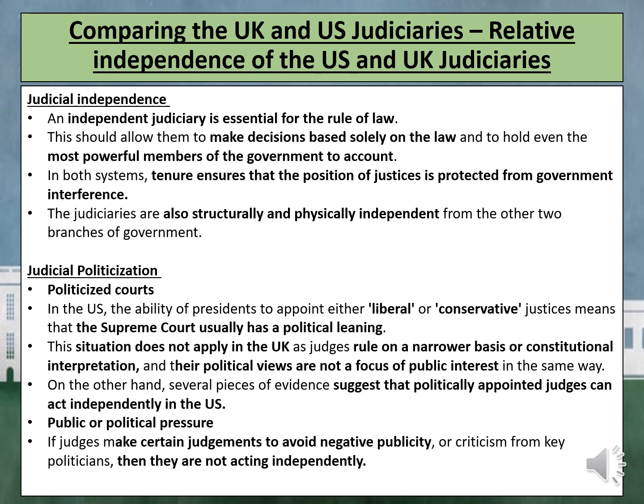This independence allows the judiciaries to rule against the government as they see fit. For example, in United States v. Texas in 2016, the court struck down Obama's executive order giving millions of illegal immigrants an indefinite delay in deportation. In the application of Public Law Project v. Lord Chancellor in 2016, the court ruled that the Lord Chancellor was acting ultra vires by imposing a residence test for legal aid — that is, state support with legal costs.